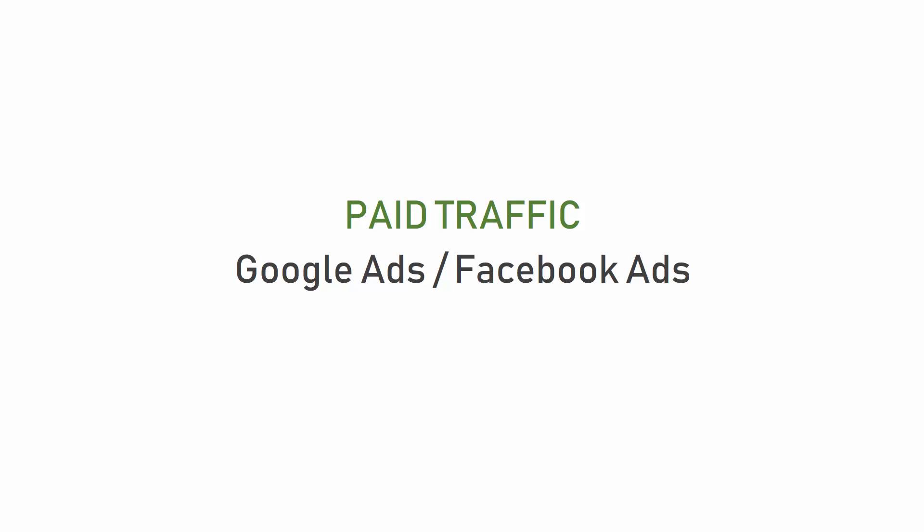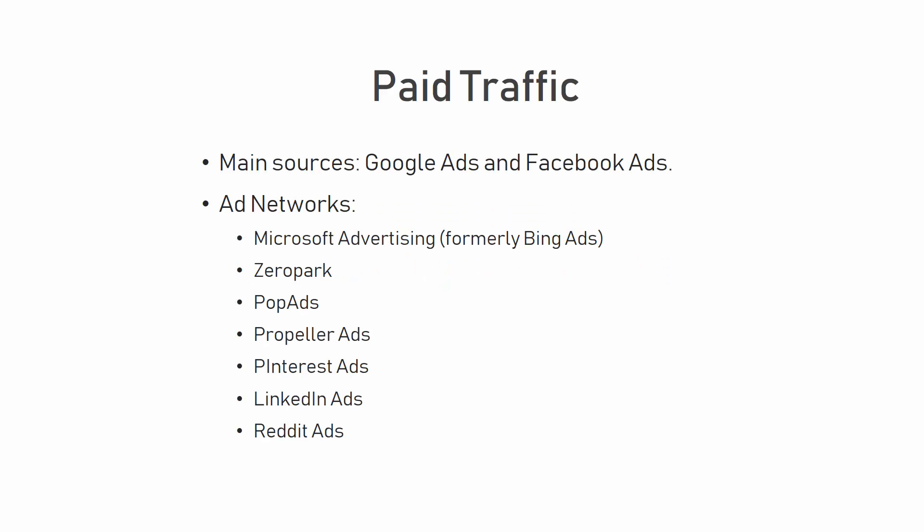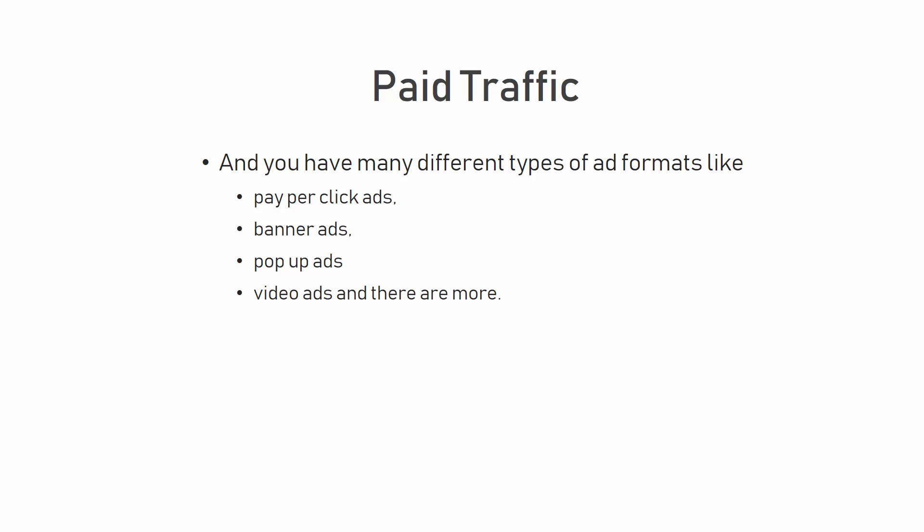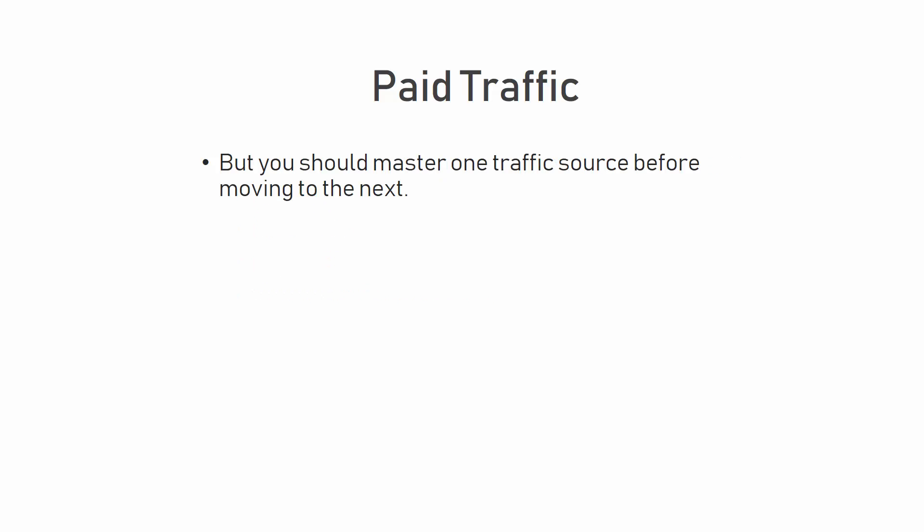Now let's talk about paid traffic. The main sources of paid traffic are Google Ads and Facebook Ads. But there are other places you can get ads from, such as Microsoft Advertising, formerly known as Bing Ads, Zeropark, Pop Ads, Propeller Ads, Pinterest Ads, LinkedIn Ads, Reddit Ads — just to name a few networks. And you have many different types of ad formats like pay-per-click ads, banner ads, pop-up ads, video ads and many more. The opportunities are limitless for the amount of traffic you can buy. But you should master one traffic source before moving to the next. It can be tempting to set up $10 campaigns in 10 different networks, but this will not bring results because it's too small an investment to see any actual data.